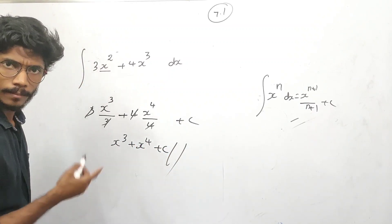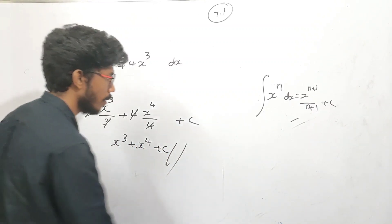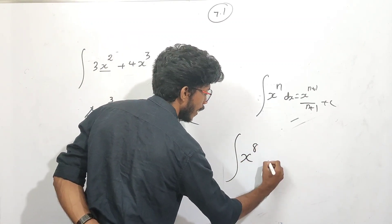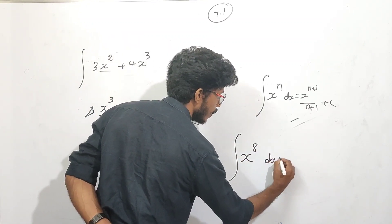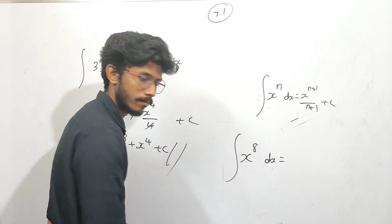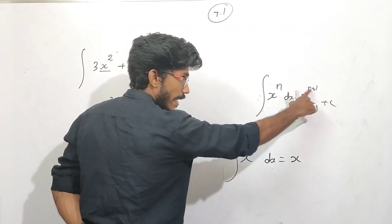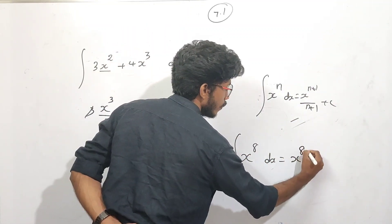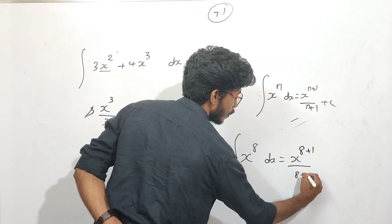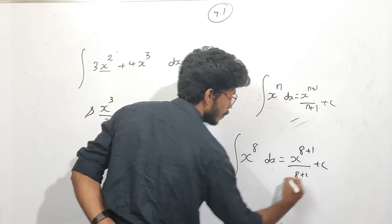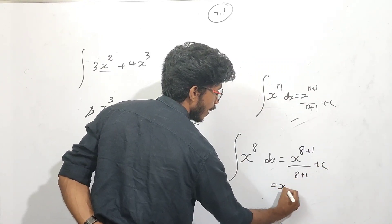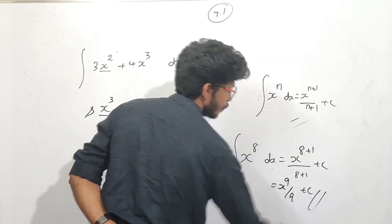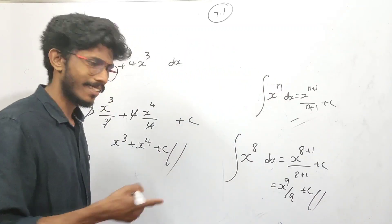This is the integral of x raised to 8 dx. What is the integral of x raised to 8 dx? x raised to 8+1 divided by 8+1, plus c — which means x raised to 9 by 9, plus c. Clear?